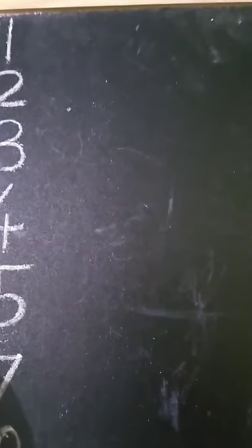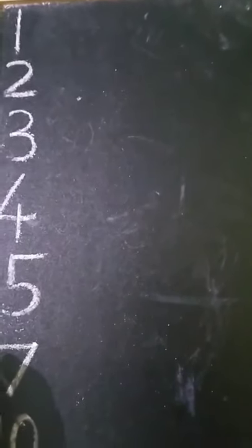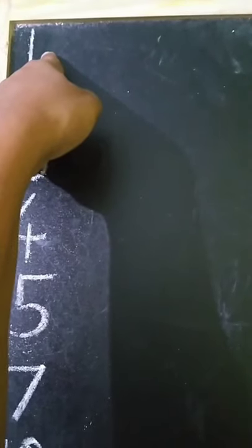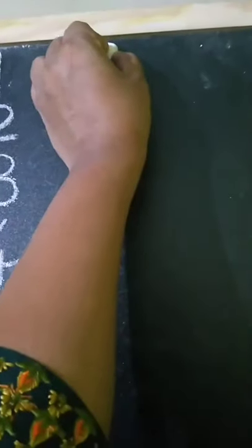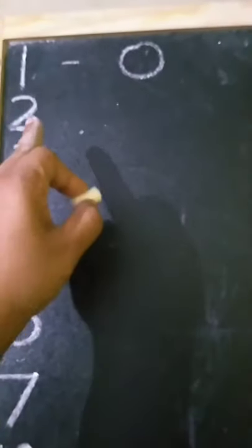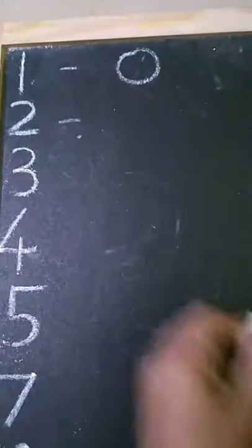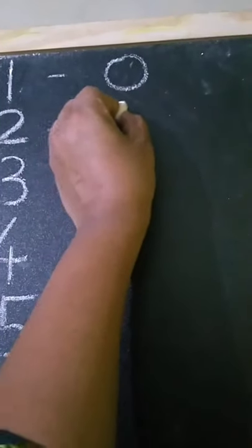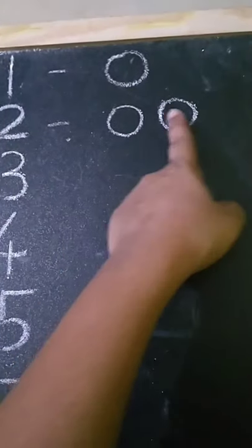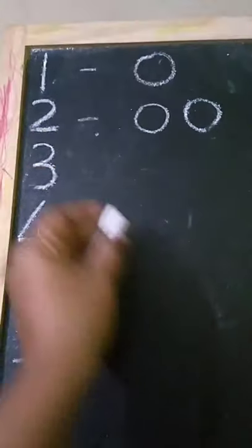So now children, we are going to draw circles for the numbers we have written. This is number 1. So how many circles can we draw? 1 — and we have 1 circle. Now the next number is 2. 1, 2. So we have 2 circles.